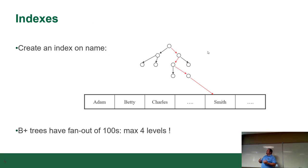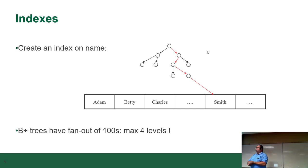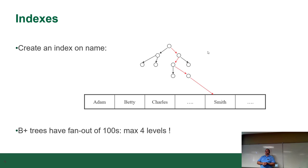When an index is created on a field like name, it creates something called a B-tree. For years I was misinformed and called it a binary tree, until someone proved to me that wasn't what it was called. The B stands for 'best' — the best tree algorithm.